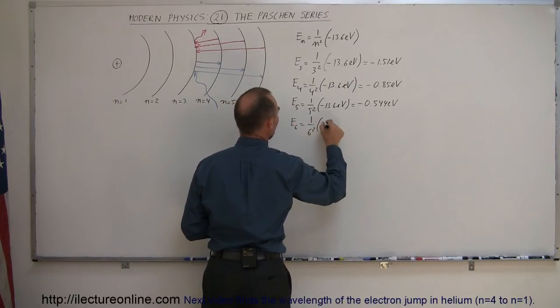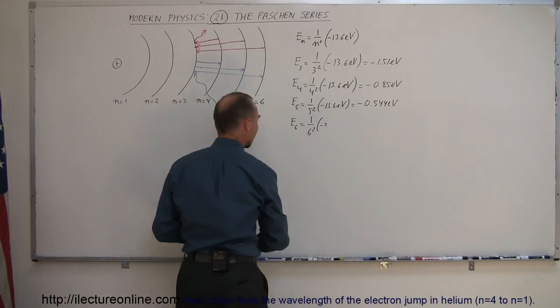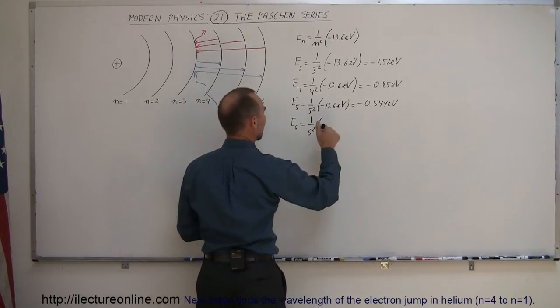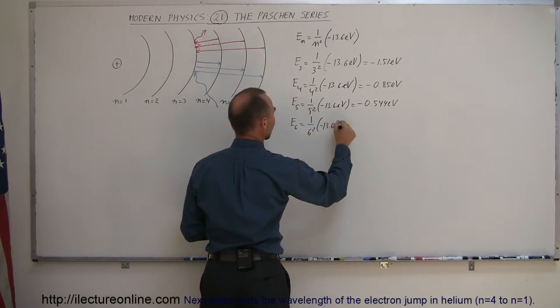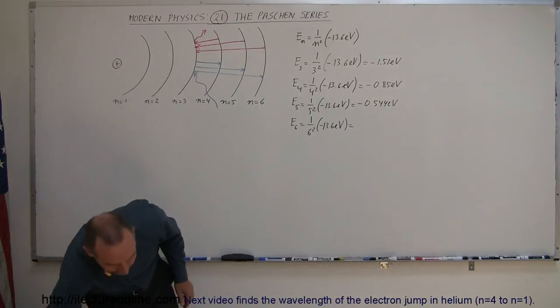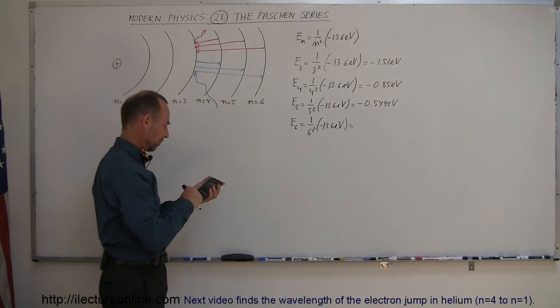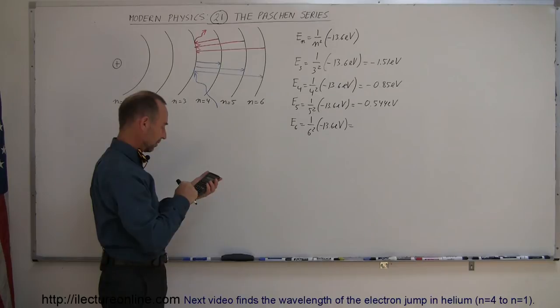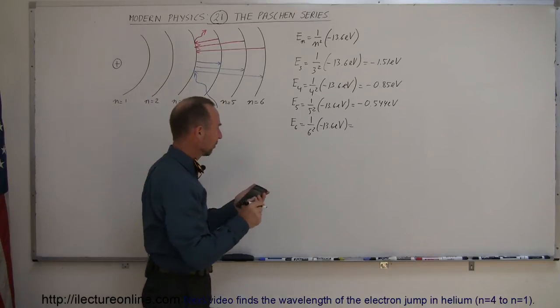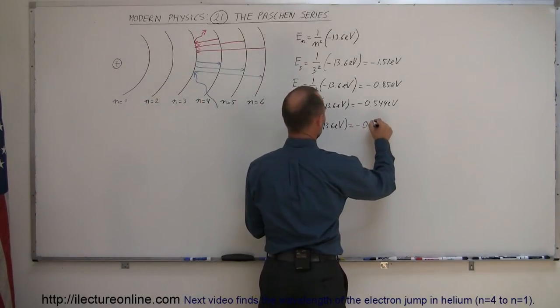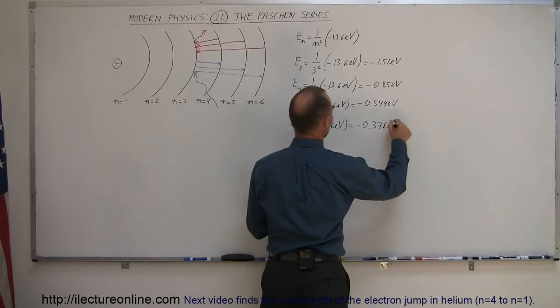Finally, the energy to the sixth level is equal to 1 over 6 squared times minus 13.6 electron volts. For that I'll need my calculator because I don't know that one by heart. Divided by 36 equals minus 0.378 electron volts.